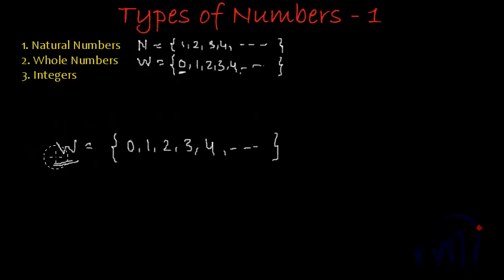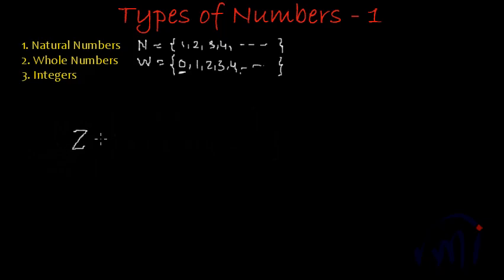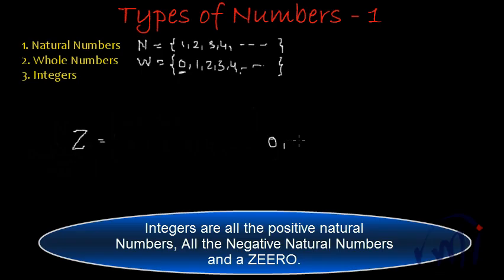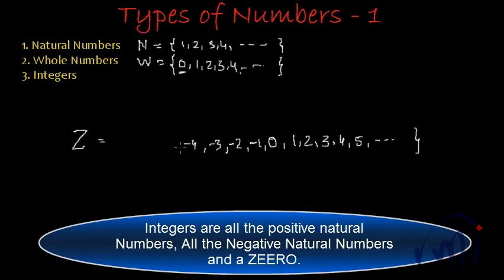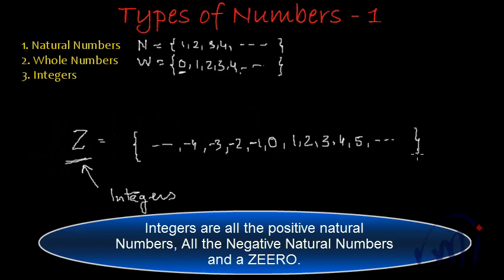Next we have integers. The set of integers is denoted as capital Z. It has 0 and then it has all the natural numbers — 1, 2, 3, 4, 5 and so on. And it also has all the negative natural numbers, that means minus 1, minus 2, minus 3, minus 4 and so on. So Z contains 0, positive integers, and along with those positive integers it has all the negative integers also.